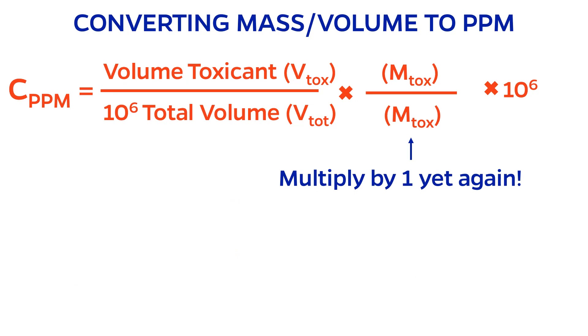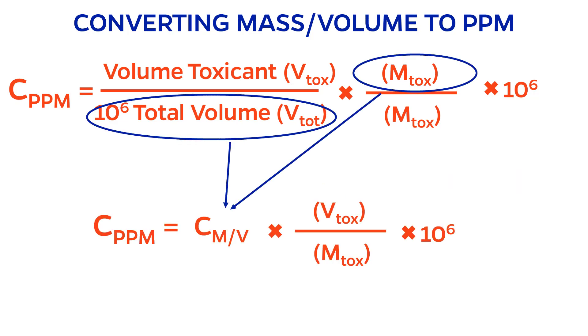Next, let's multiply by 1 yet again. This time, 1 is the mass of toxicant over the mass of toxicant. Now I can pull out mass of toxicant divided by total volume, since this is literally the definition of concentration in mass per volume units.